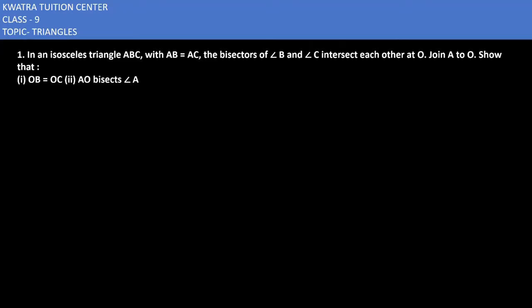It says in an isosceles triangle ABC where AB is equal to AC, bisector of angle B and C intersect each other at angle O, sorry at point O.